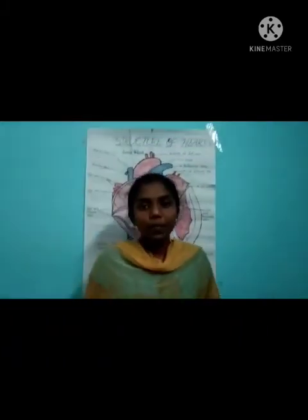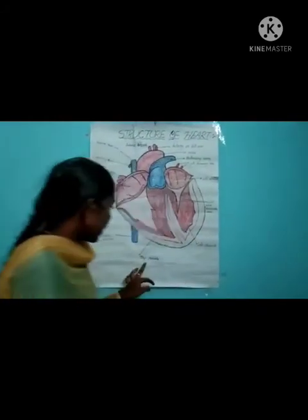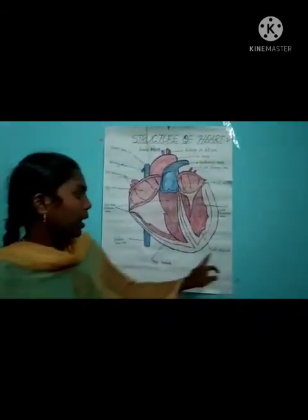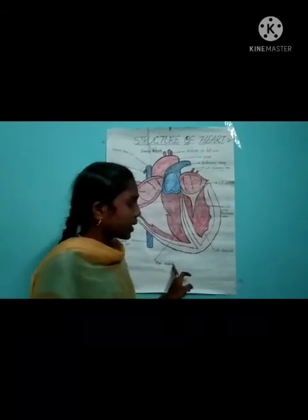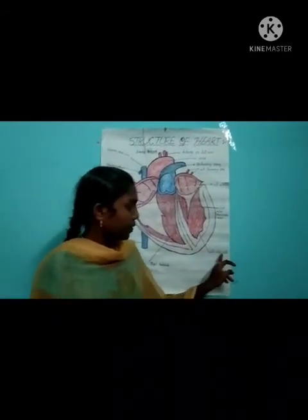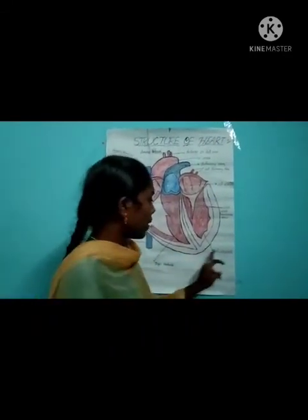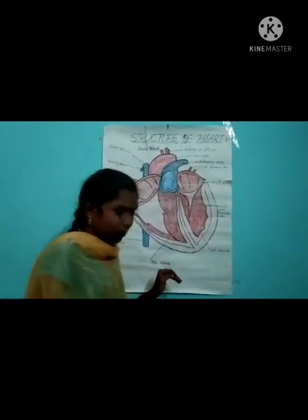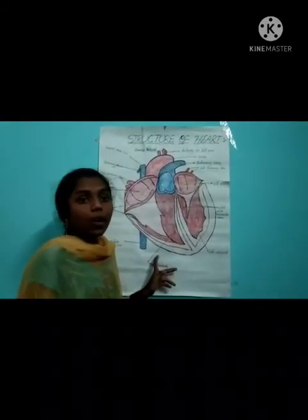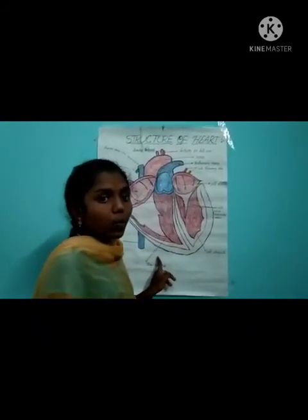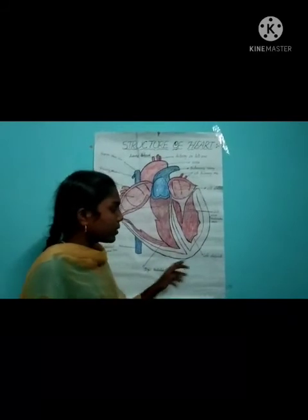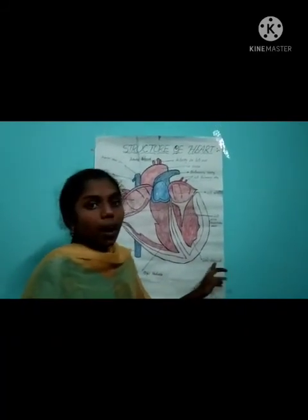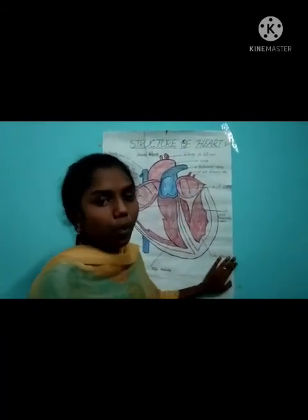There are two types of blood pumped out: the right ventricle and the left ventricle. The right ventricle pumps deoxygenated blood to the lungs, and the left ventricle pumps oxygenated blood to the body.